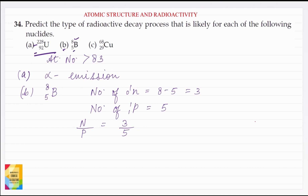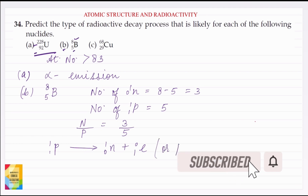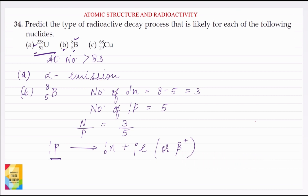In this case the N/P ratio is very low, so it will try to increase its N/P ratio to increase stability. Because of which it may undergo positron emission and electron capture. During positron emission, a proton gets converted into a neutron and a positron — the positron being an electron with a positive charge.